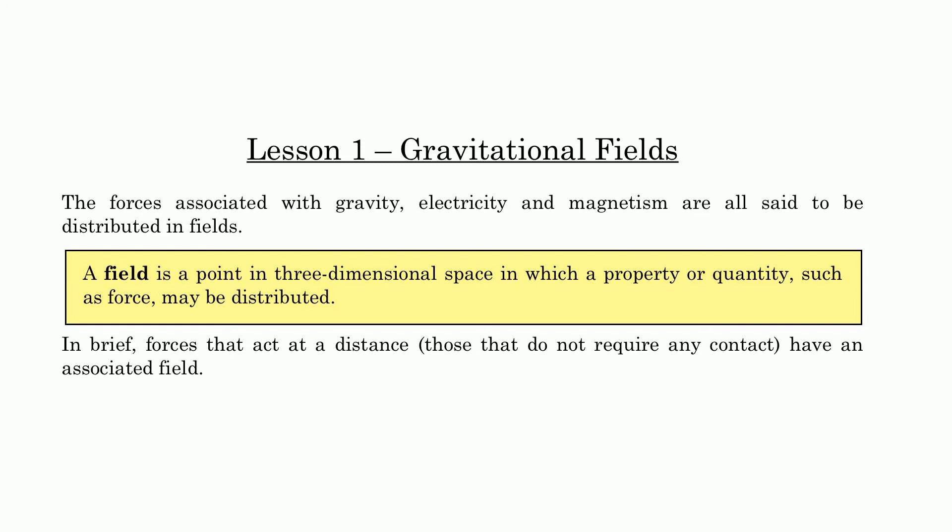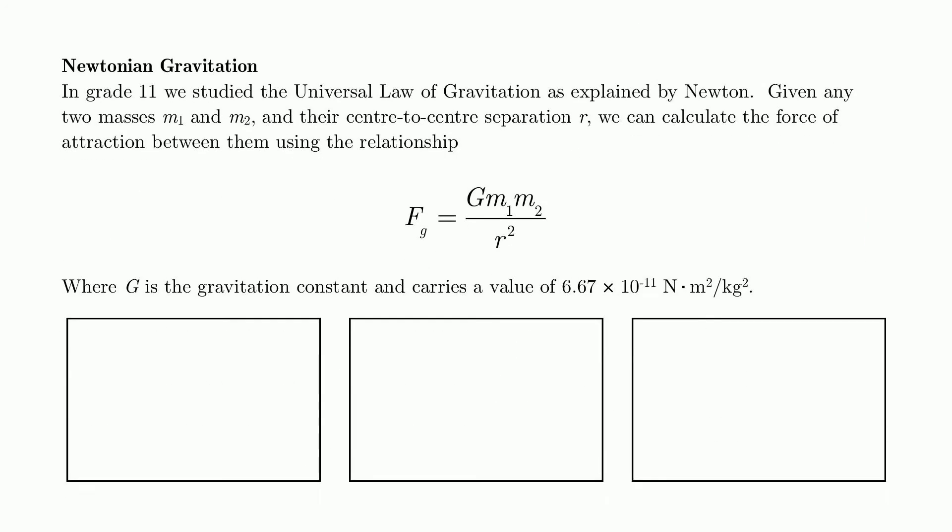But onwards to more specific things. When we took grade 11 physics, and for the last little while, we studied Newtonian gravity. And in Newtonian gravity, we saw this, which was Newton's universal law of gravity. And it basically says that the force of gravity between any two masses, M1 and M2, is basically equal to G, M1, M2, all divided by R squared. G is the gravitation constant. It has the value of 6.67 times 10 to the negative 11. And from here, we notice three things. First, we notice that the force of gravity is always attractive.